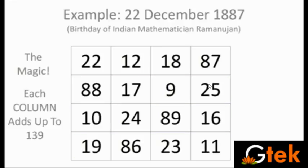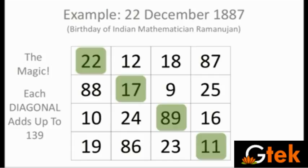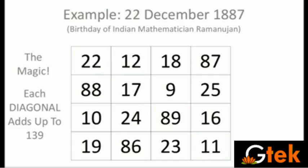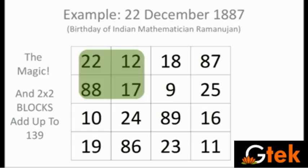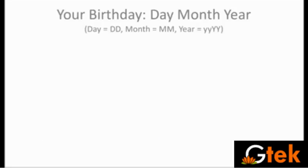While adding, you will get 139. Each column and each row when you add it up gives 139, and diagonally you will get it too. You can also see different patterns — 2x2 blocks — everything gives 139.